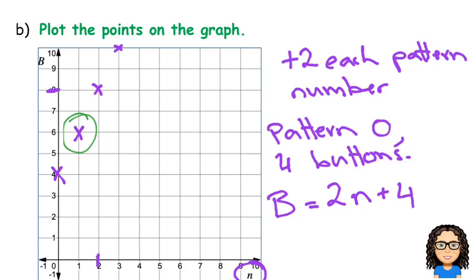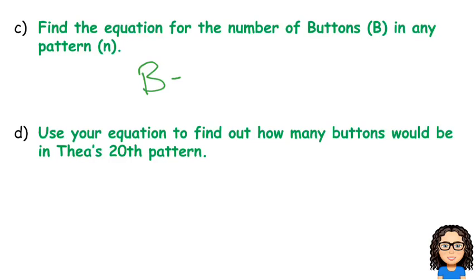So, say I was to check this point here. So, if I put 2 times 1 plus 4, that's going to give me 6, which is the correct value. Let me check this one. If I did 2 times pattern number 2 plus 4, 4 plus 4 will give me 8, which is that point there. So, our equation is the number of buttons is equal to 2 times the pattern number, plus 4, because that's our pattern starting.